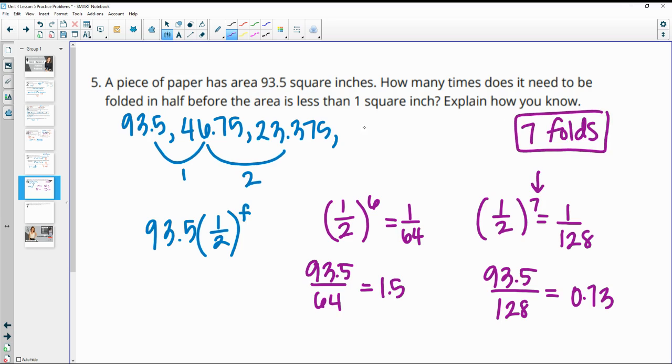And so again, you could have kept doing this and then you would have gotten down to 1.5 after 6 folds and then 0.73 after 7 folds to see it that way as well.